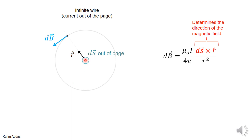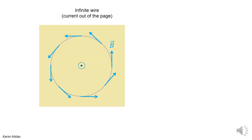If you imagine looking from a top view, the wire here is the infinite wire coming out of the page, and the current is coming towards you. The ds vectors point in the direction of the current, coming out of the page. The r-hat unit vector points from the element to the point where you want to find the magnetic field. So ds cross r-hat points in that direction, and you can conclude that the magnetic field lines go around in circles.